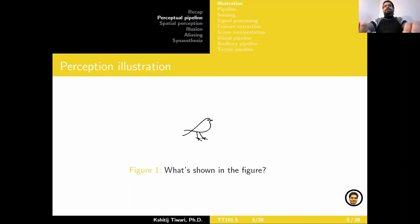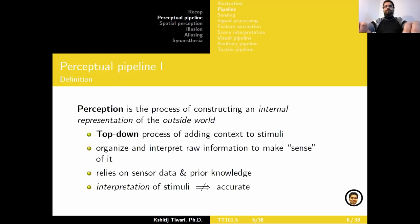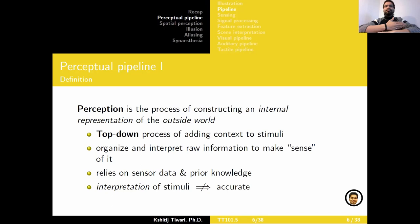What you did through that illustrative exercise is essentially what perception is. Perception is the process of constructing an internal representation of the outside world when presented with a stimulus. When I showed you the very first step of that illustration with just a blip and a few strokes, that was me giving you a visual stimulus. When I was walking you through the illustration, that was you trying to build an internal representation of what you're seeing and what it could possibly mean. Perception is a top-down process where you're adding context to a stimulus based on your prior knowledge and what your sensor data is reporting. Essentially, you're trying to make some sense of what your sensors are telling you — going from raw information to something meaningful.